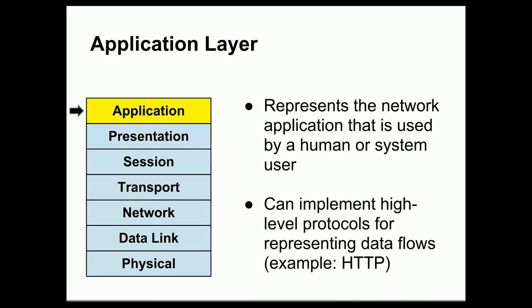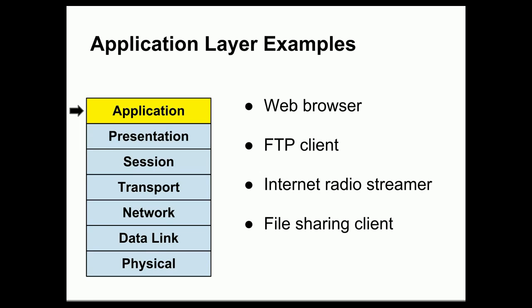Finally, the application layer is the network application itself — the application that a human or system user is using to perform some type of task that requires network connectivity. The application layer can implement its own high-level protocols for sending and receiving data. A good example of an application layer protocol is the Hypertext Transfer Protocol, or HTTP, which makes the World Wide Web function. The web browser is an example of an application layer application.